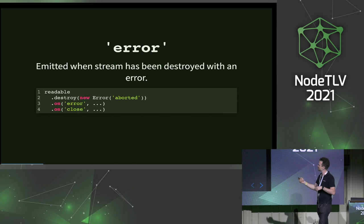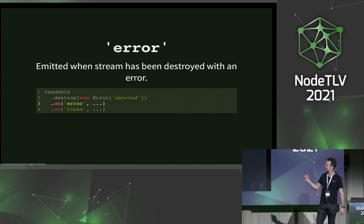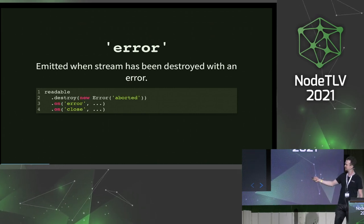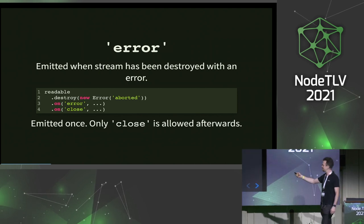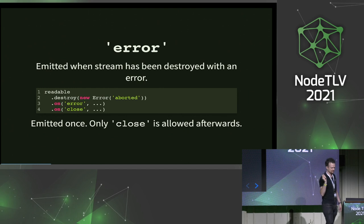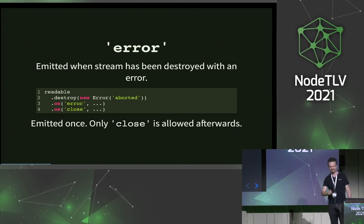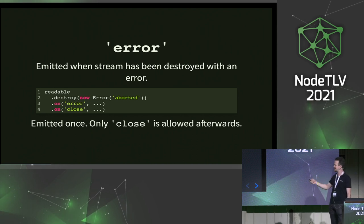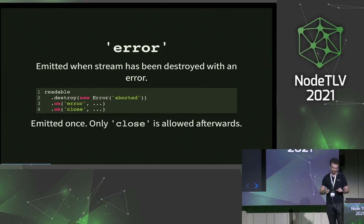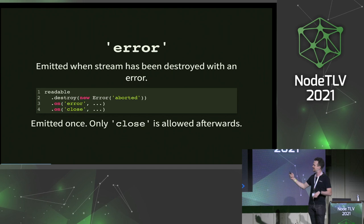Error is emitted when you invoke destroy with an error — then error gets emitted, and finally close. Error should only be emitted once, and only close is allowed to be emitted after an error. Again, these are things that haven't been true in the past but now are. You might have assumed that after error only close is emitted, but that wasn't always true. We've done a lot of work to make sure these invariants are followed.